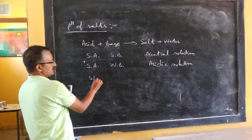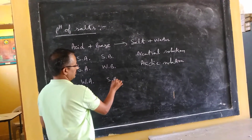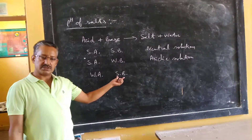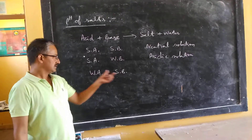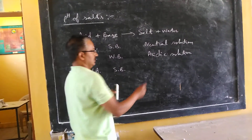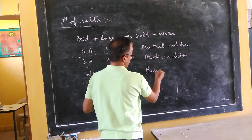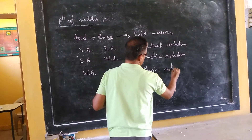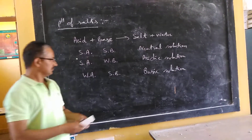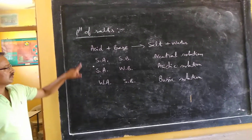Similarly, if the acid is weak and the base is strong, then there will be more OH⁻ ions and fewer H⁺ ions, so the result will be a basic solution.